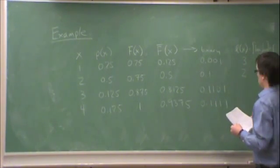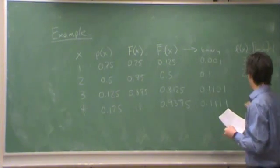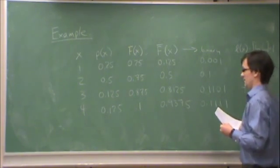Here, log 1 over 0.125 is 3 plus 1 is 4. And here it's also 4.